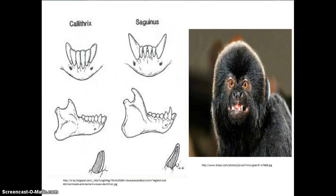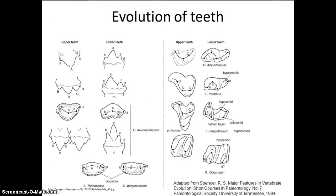A different aspect of dentition places the Calamico in closer relation to the Callitrichidae, reflected through their diet. Marmosets and some other Callitrichidae eat a lot of exudates, and as a result have developed forward-facing incisors specialized to tapping through bark. The Calamico has similar dental morphology.